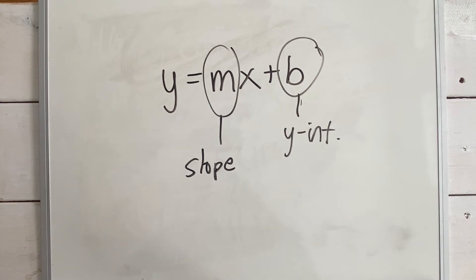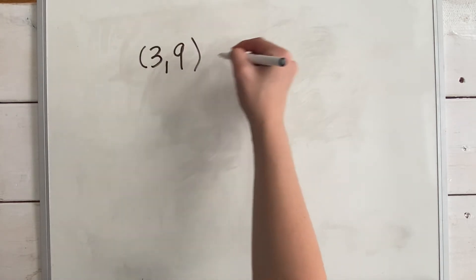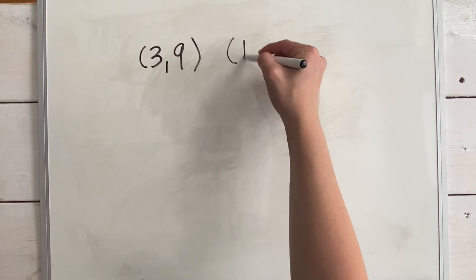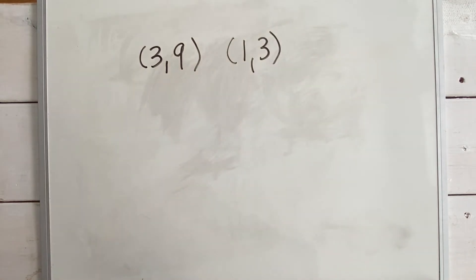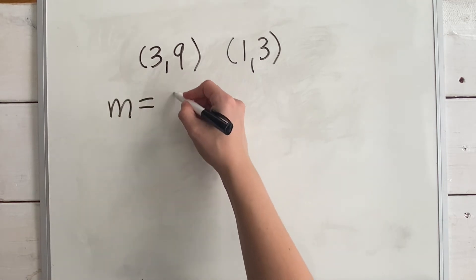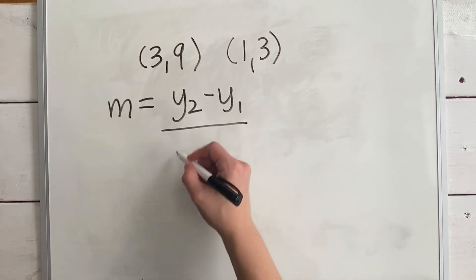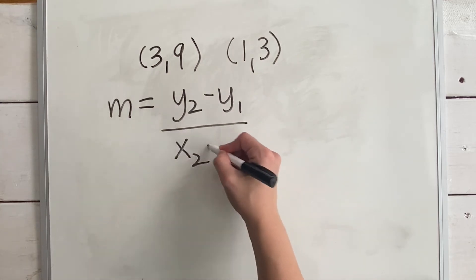Let's use an example line to illustrate how this works. Say two points on our line are (3,9) and (1,3). We find our slope m by using this equation: m is the change in y over the change in x, which we can write as y2 minus y1 over x2 minus x1.